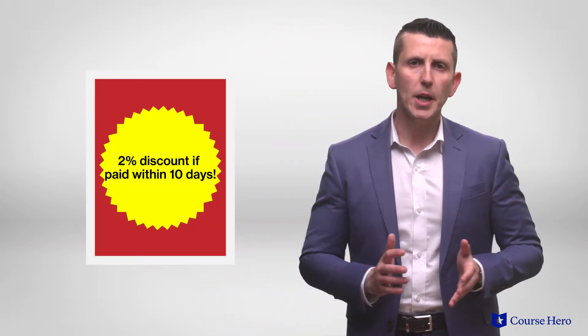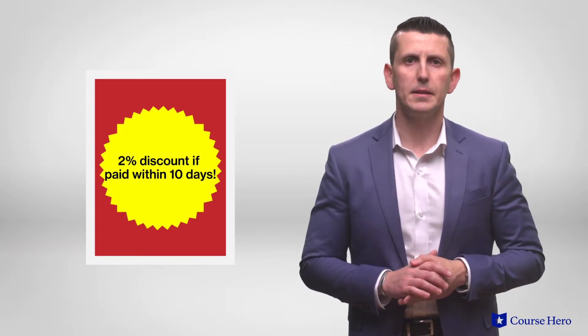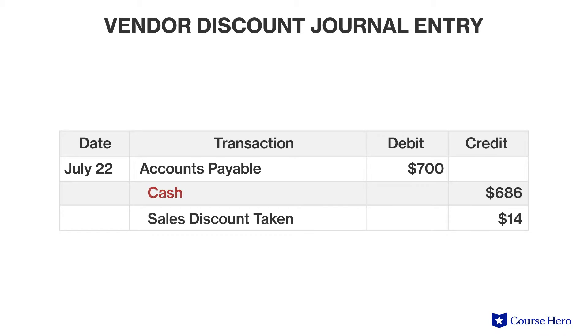Sometimes vendors offer discounts for early payment. For example, Green Company could offer J Company a 2% sales discount if payment is received within 10 days. This arrangement would be defined as 2/10 net 30. If J Company takes advantage of this discount by making an early payment, the journal entries would include a credit to cash of only $686 — $700 net of a 2% discount. The remaining credit would be to a discount account, which is effectively an income statement gain account.